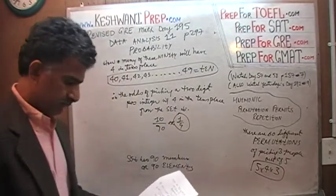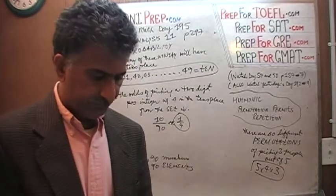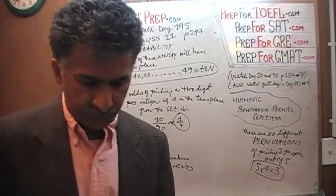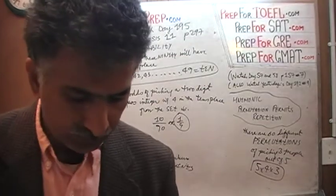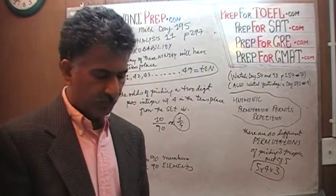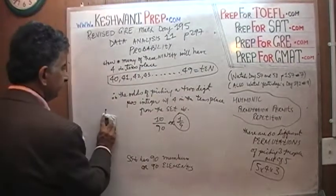That's it. The odds are one-ninth. Because there are ten of them with the four in the tens place, and there are 90 altogether, so it's one out of nine.